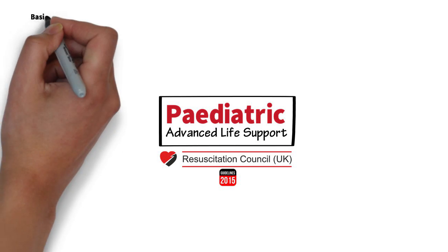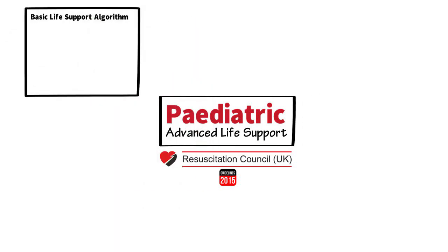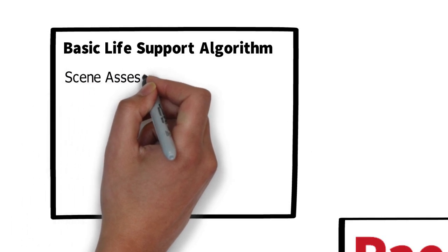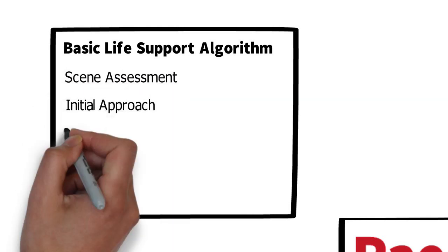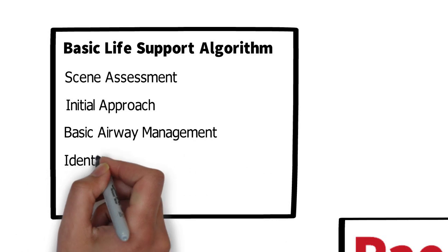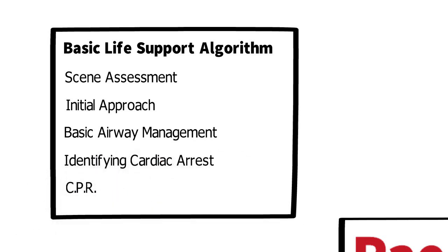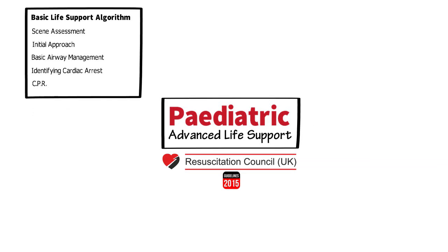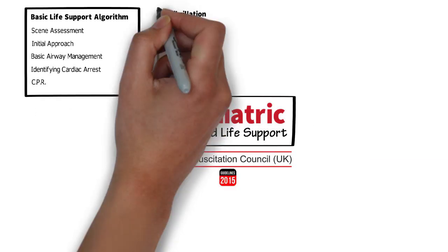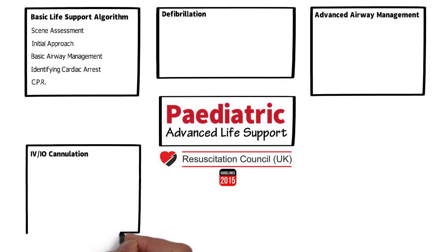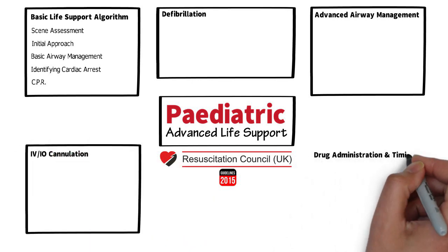We'll build on the paediatric BLS algorithm which we have examined previously. In broad terms that consists of scene assessment, initial approach, basic airway management, and identifying cardiac arrest and CPR. In this session we're going to build on that basis and examine the extra components of ALS. The main categories for this are defibrillation, advanced airway management, IV or IO cannulation, and drug administration and timings.